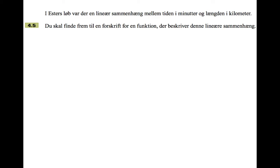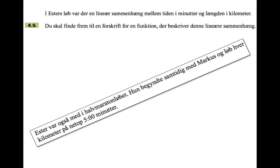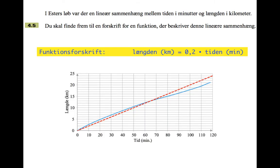Question 4.5: in Esther's run there was a linear relationship between the time in minutes and the length in kilometers. Find a formula for the function that describes the linear relationship. A linear relationship just means that if you do the graph of it, it's an exact straight line. She ran each kilometer in exactly 5 minutes. If we were to do the graph of it — and here it is, taken from a later part of the question — the blue line is Marcus's progress.